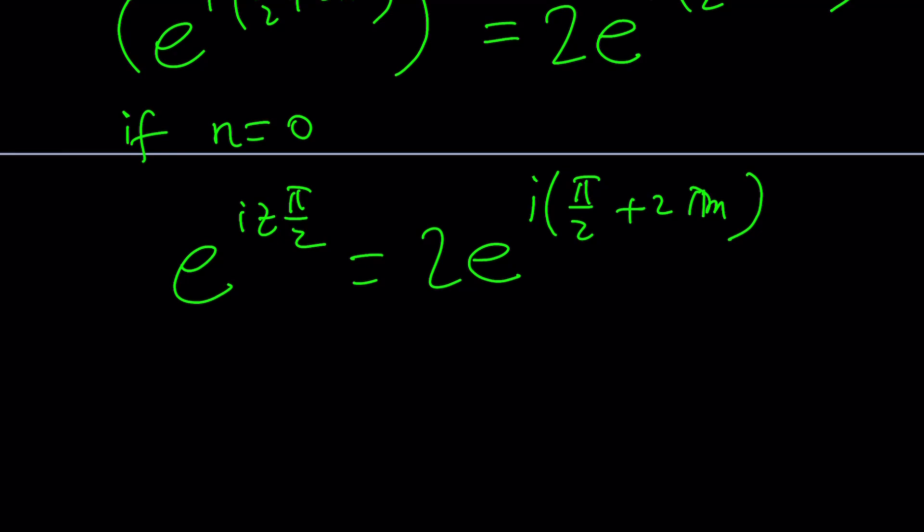At this point, it makes sense if we natural log both sides, so we can bring these down. And that's going to give us i z times pi over 2 equals ln 2. By the way, that's a real ln. Plus i times pi over 2 plus 2 pi m. I forgot to say, but n and m are integers.